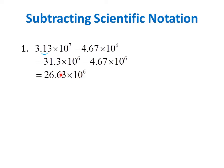Notice that this difference has 2 digits before the decimal point. If we want to write the final answer in scientific notation, we have to move this decimal point one place to the left. So we get 2.663, and we retain the 6 because it is followed by 3, which is less than 5. Since we moved the decimal point one place to the left, the exponent 6 becomes larger by 1, so it becomes 7.